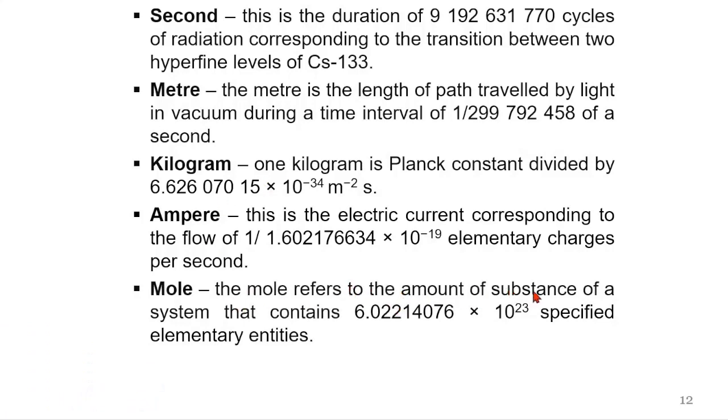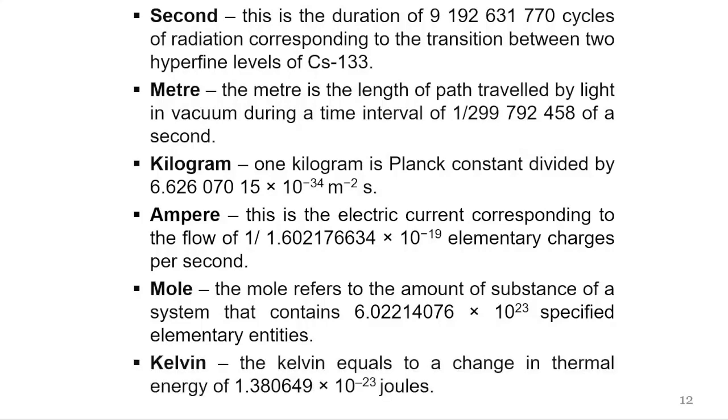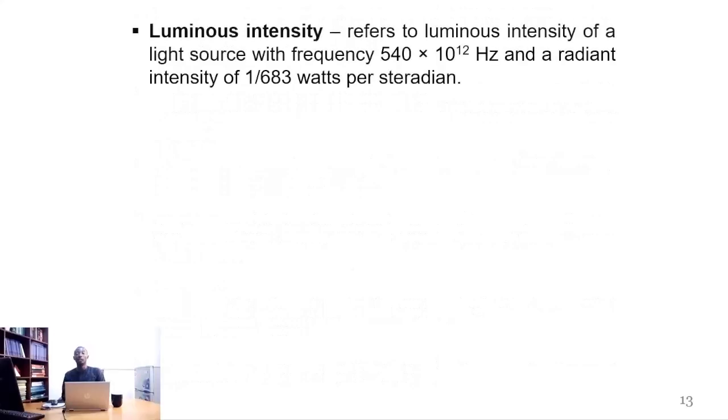The mole refers to the amount of substance in a system that contains 6.02214076×10²³ specified elementary entities. Kelvin equals a change in thermal energy of 1.380649×10⁻²³ joules. The luminous intensity refers to intensity of a light source with frequency 540×10¹² hertz and a radiant intensity of 1/683 watts per steradian.